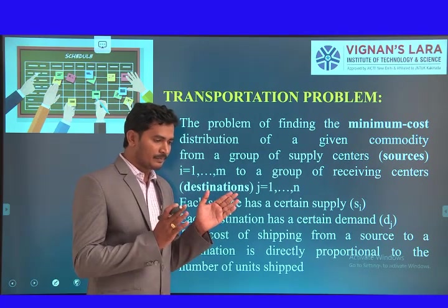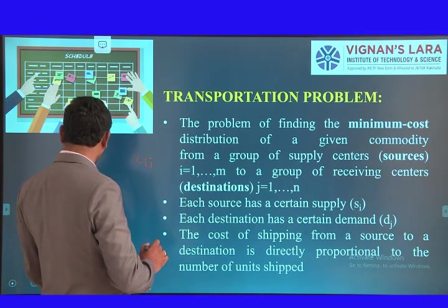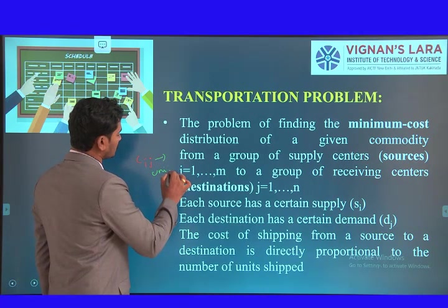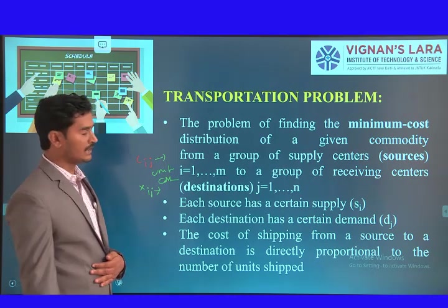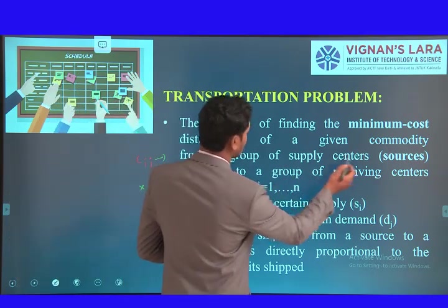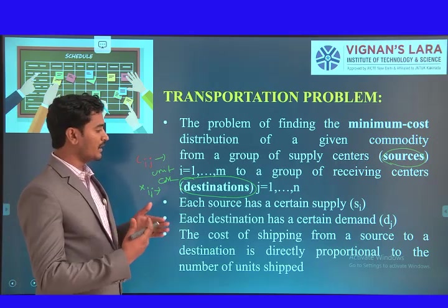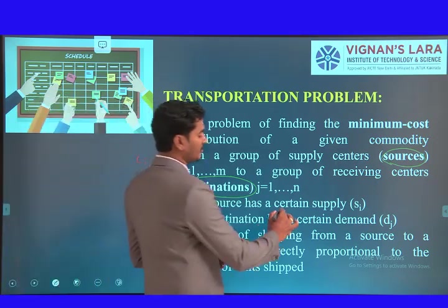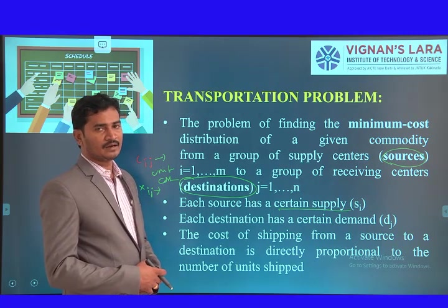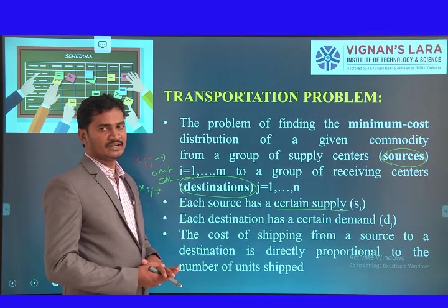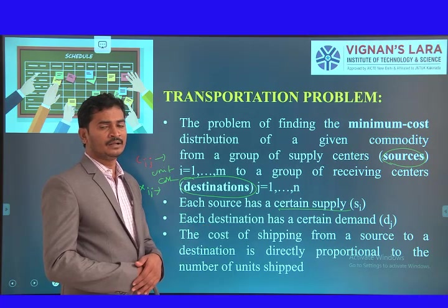This problem has the following structure: we have Cij, which means the unit transportation cost, and Xij, which is the number of units transported. Here, 'source' is called the supply station and 'destination' is called the demand station. There is a relation between supply and demand. Each source has a certain supply. For example, consider a pen manufacturing industry — they have a number of operations to fabricate the pens.